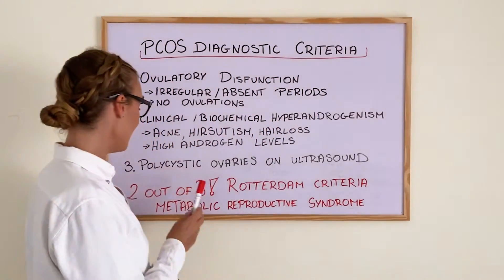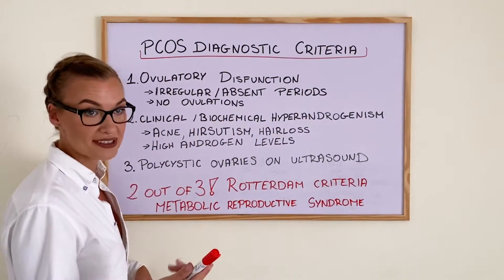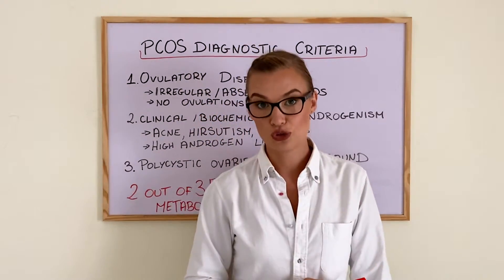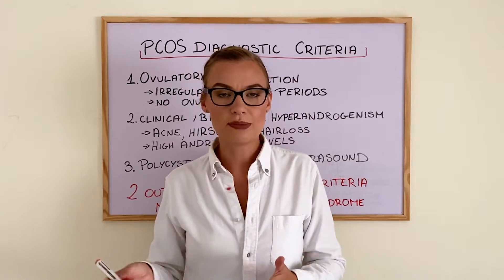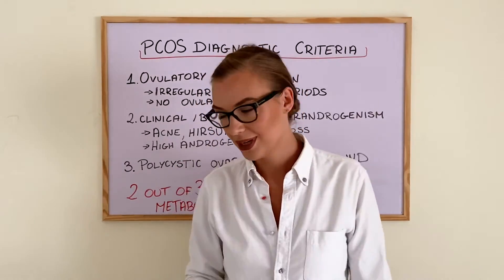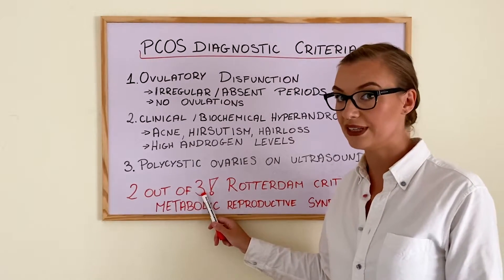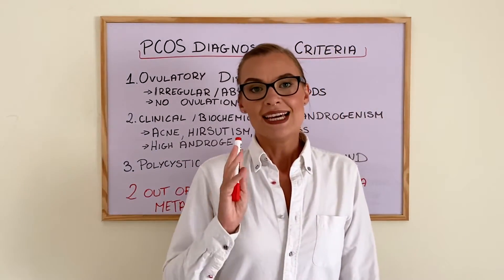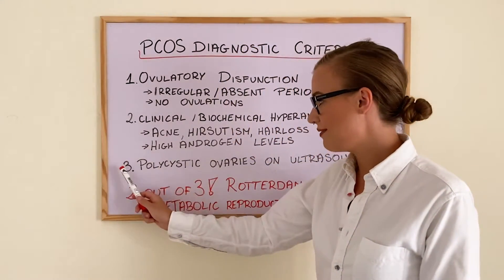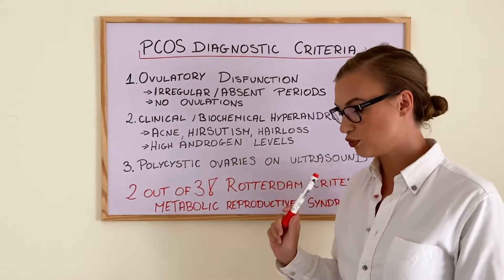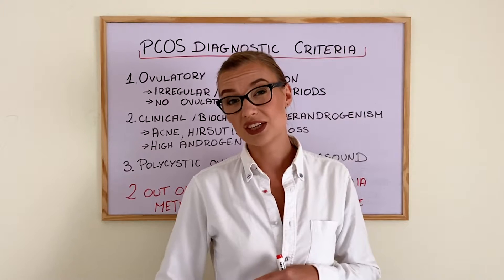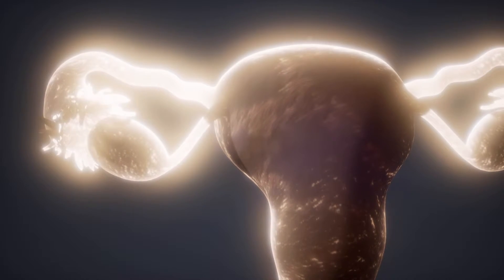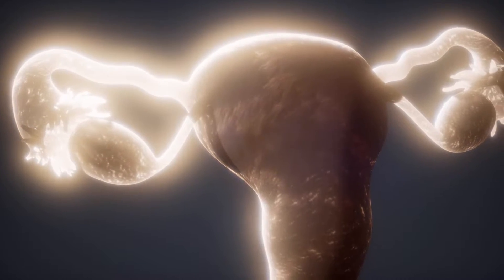The third criteria is actually very simple: for polycystic ovarian syndrome, you will have polycystic ovaries on an ultrasound test. That is the tricky one, because the name of the syndrome is polycystic ovarian syndrome. However, an important thing to know is that you only need two out of three of these criteria. This is called the Rotterdam criteria, which has been in use since 2003. The ultrasound is usually either an external scan, or more likely an internal transvaginal ultrasound where your doctor can look at your ovaries more closely.